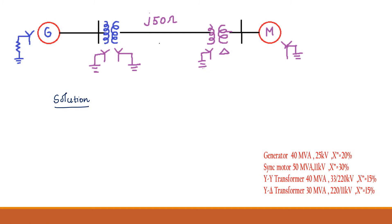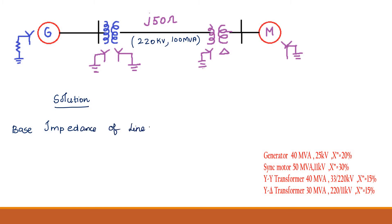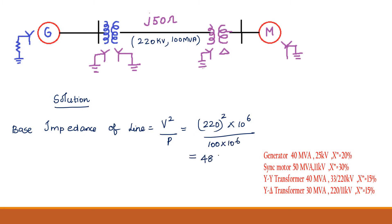Now I am going to find out the base impedance of the transmission line. For the transmission line, base KV is 220 kV and base MVA is 100 MVA. The base impedance formula is V² divided by P. So, base impedance equals 220² × 10⁶ divided by 100 × 10⁶, which gives 484 ohm.